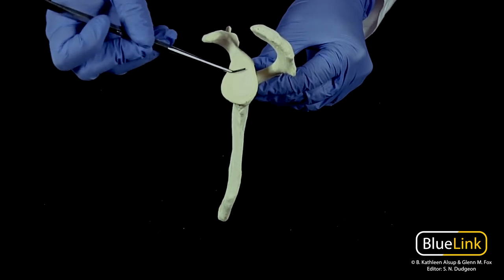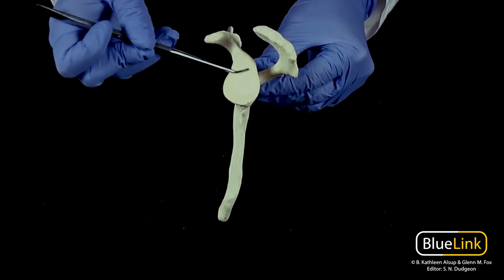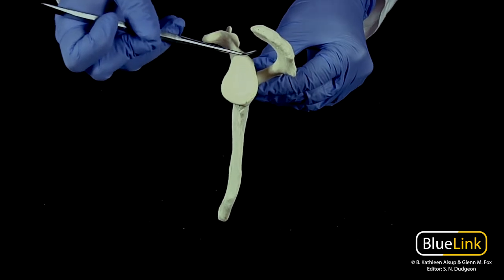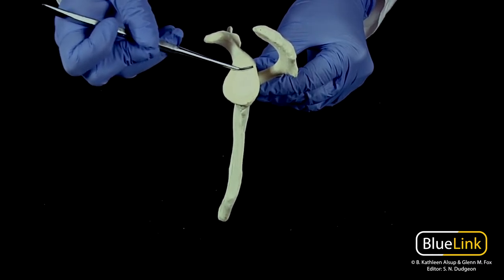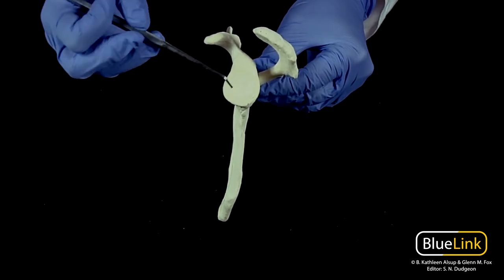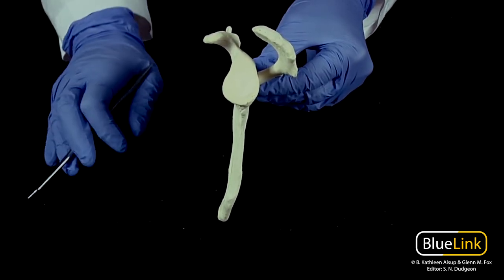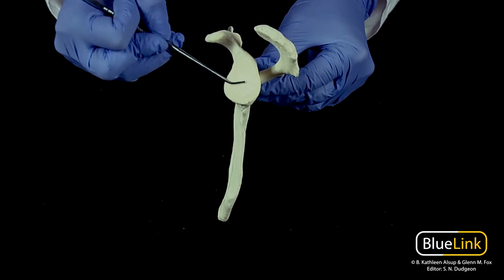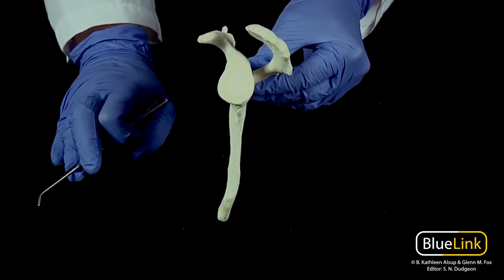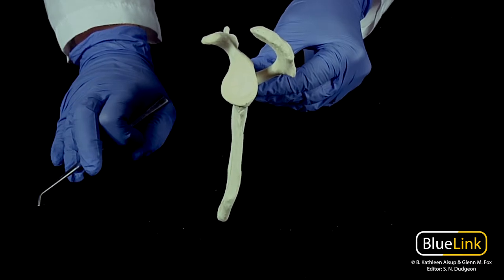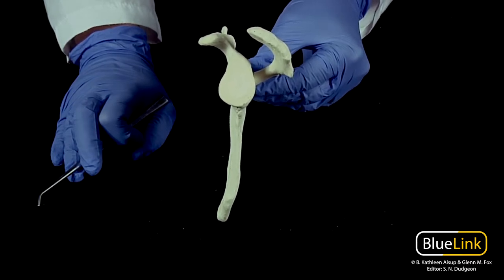One thing I want you to note about the glenoid cavity is how shallow it is. And particularly when we talk about the acetabulum of the pelvis, you'll see that that's quite a bit deeper. So the shallowness of this cavity actually has lots of implications in terms of the mobility of the shoulder joint as well as the stability of the shoulder joint.